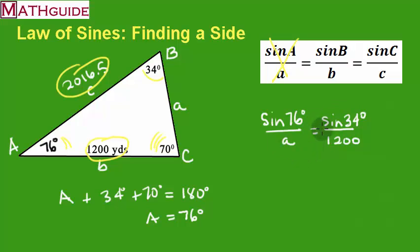So I'm going to solve this by cross-multiplying. So I'm going to multiply A times the sine of 34. And I'm going to multiply these. I'm going to multiply 1,200 times the sine of 76.